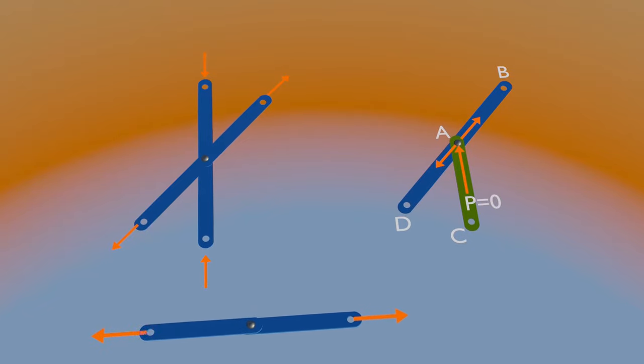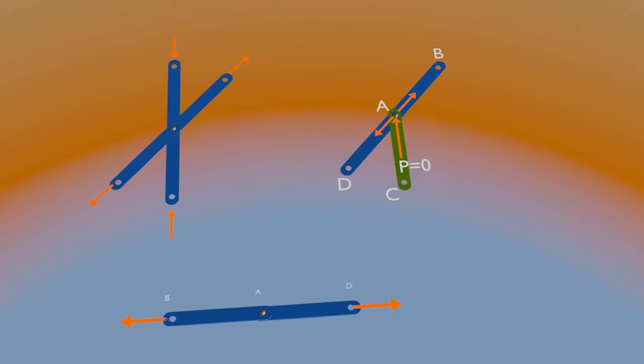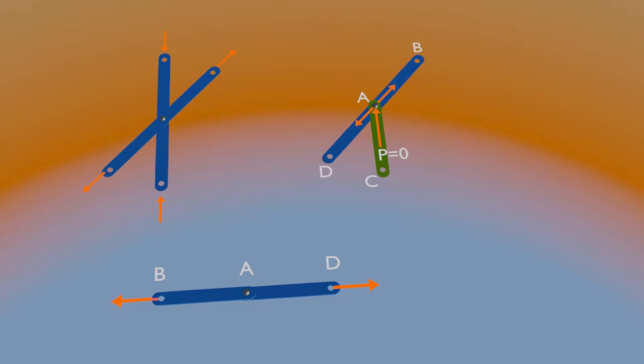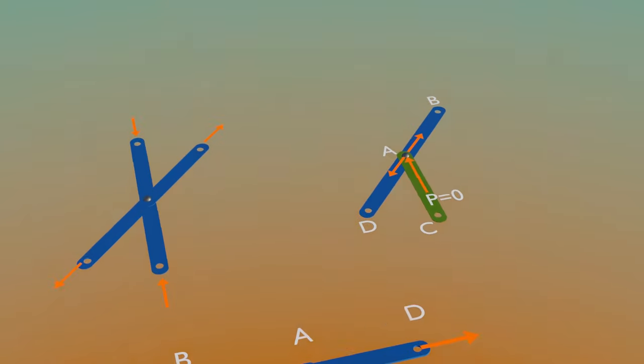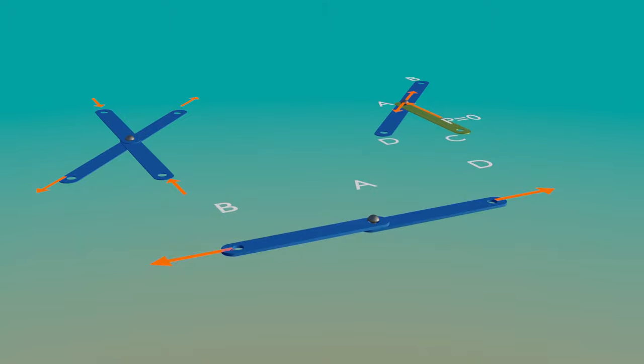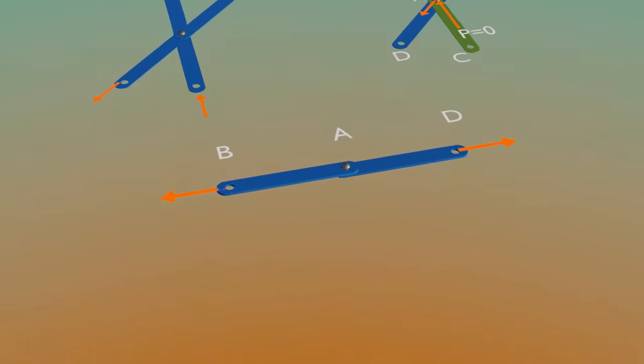Now consider again, a joint connecting two members only. We know that a particle acted upon by two forces is in equilibrium if the two forces have the same magnitude, same line of action, and opposite sense. So, in the case of this joint, which connects two members AB and AD lying along the same line, the forces in the two members must be equal for pin A to be in equilibrium.